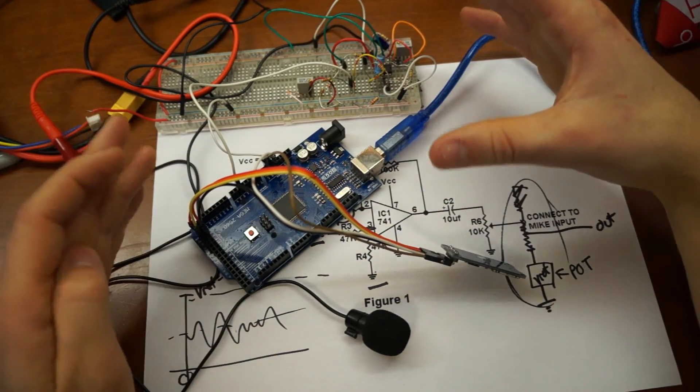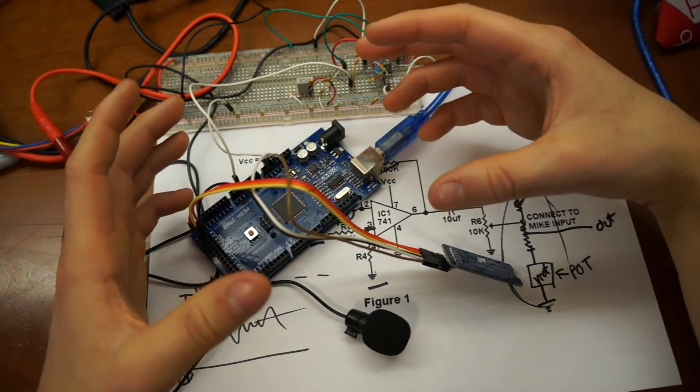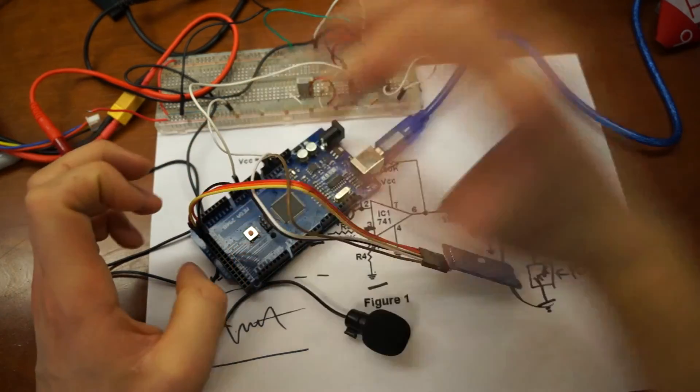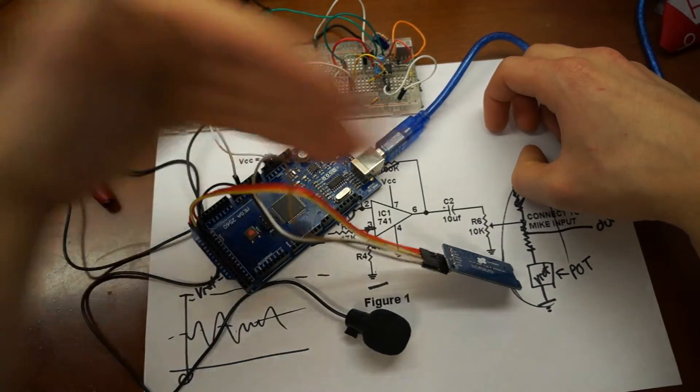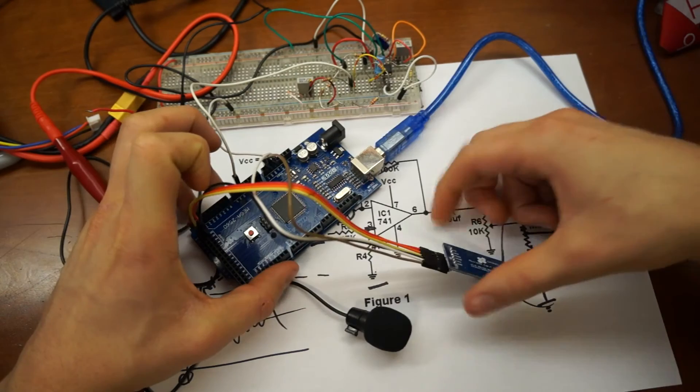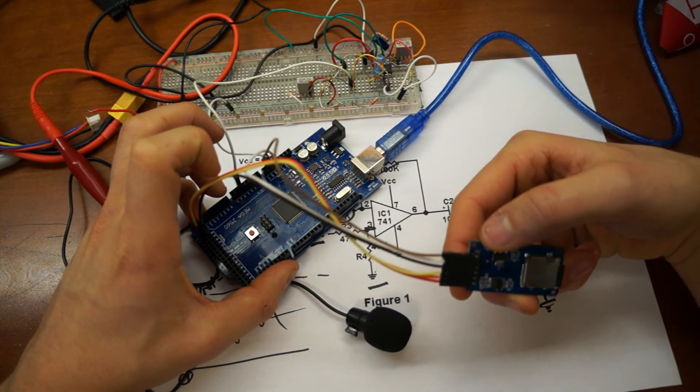And so what happens very roughly is the buffer is populated. And when it's filled up to 512 bytes, the storage buffer shifts to a new buffer. So analog values are streamed into that one while the initial buffer dumps its memory into, or dumps its data into the chip.